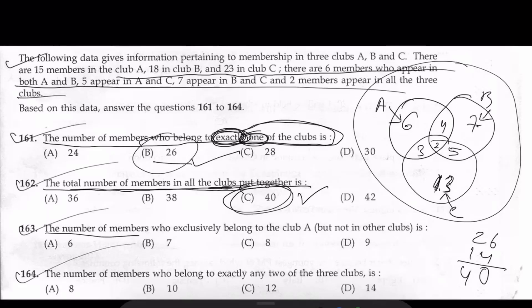Question 163: the number of members who exclusively belong to Club A. That is only A, which is 6. So the answer is 6.